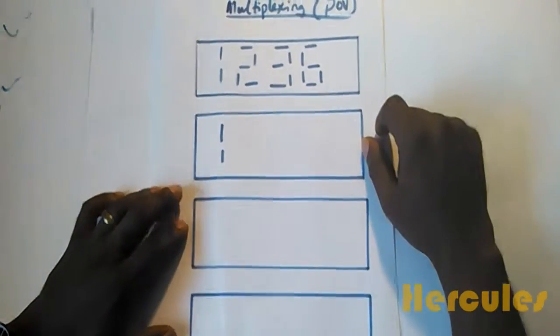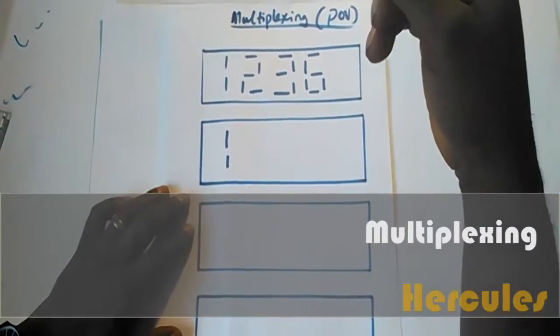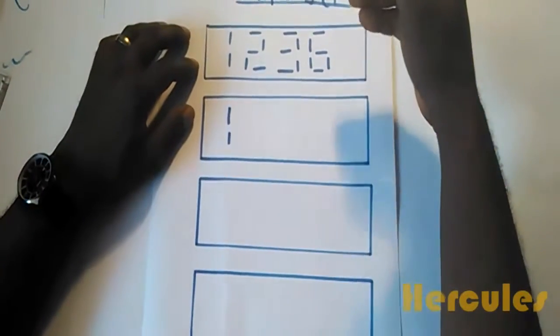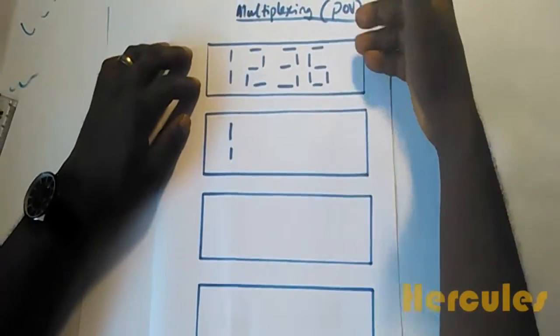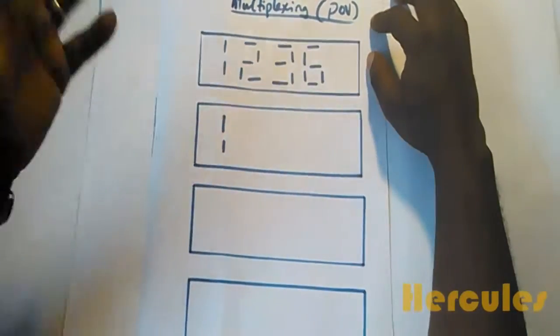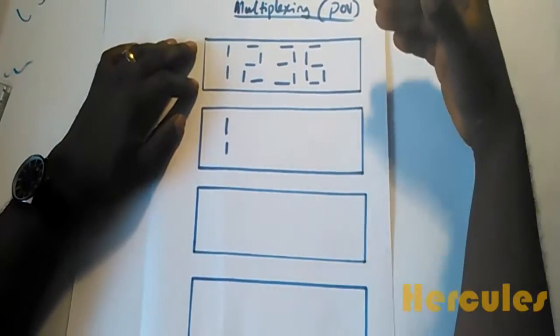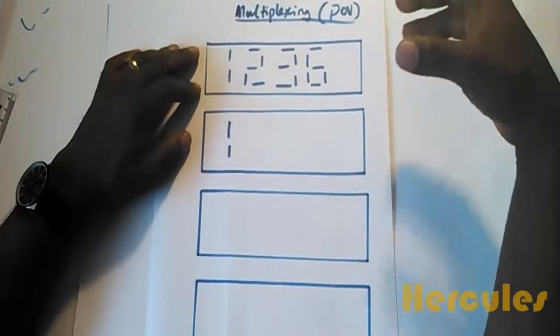We're going to be looking at a new term: multiplexing. We've seen persistence of vision in the previous explanation. Multiplexing is a way of achieving persistence of vision in hardware. Multiplexing is a hardware technique that allows you to save microcontroller pins.